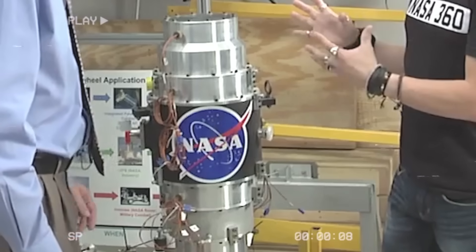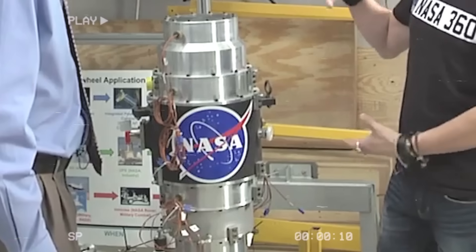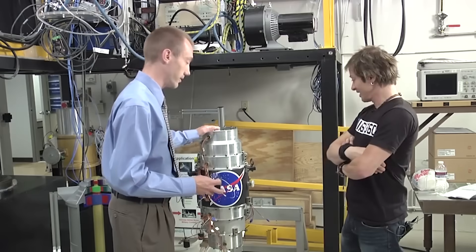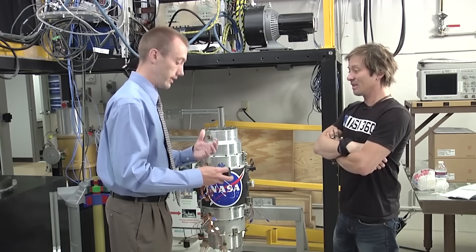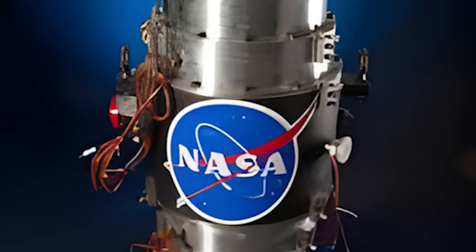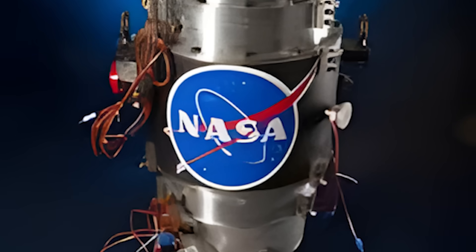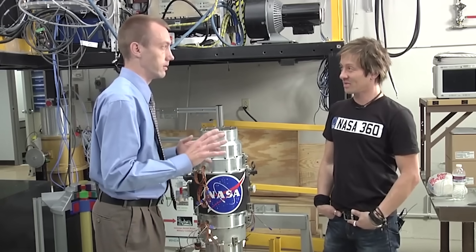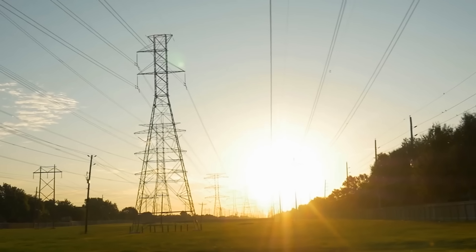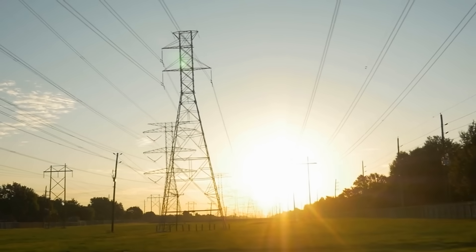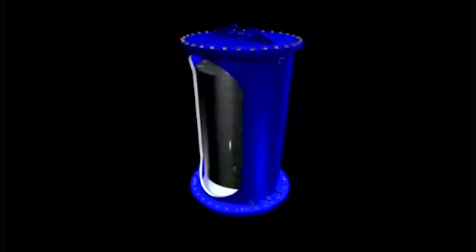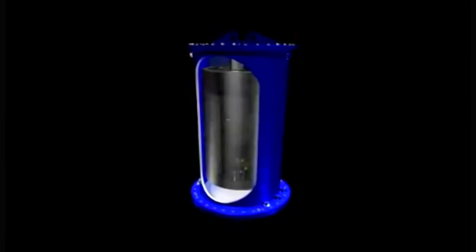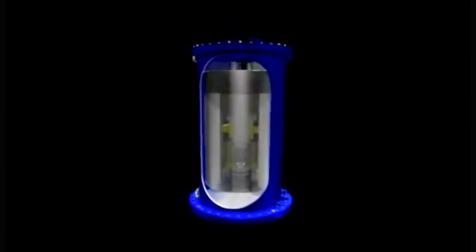So next time you see a quiet metal box humming in a field or a research headline about flywheel storage, remember this story. Maybe it's just a smart battery, or maybe it's the first spark of a world where energy is finally free and the people who built it are fighting to keep it that way. Because in a world addicted to control, true independence doesn't come from politics or power grids. It comes from something much simpler: a wheel, spinning in silence, waiting for us to notice.